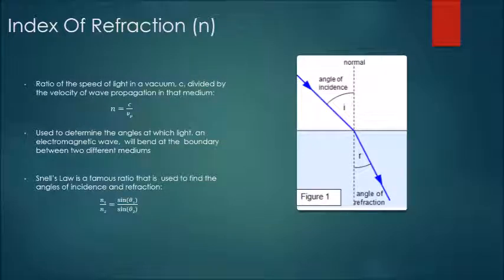The index of refraction N is the ratio of the speed of light in a vacuum divided by the speed of wave propagation in the medium it is traveling in. It is used to determine the angles at which an electromagnetic wave, such as light, will bend when entering a new medium. The speed of wave propagation in a medium is also known as the phase velocity. An important relationship to refer to when calculating the angle of refraction of a wave passing through two mediums is Snell's law, which is given at the bottom of this slide.